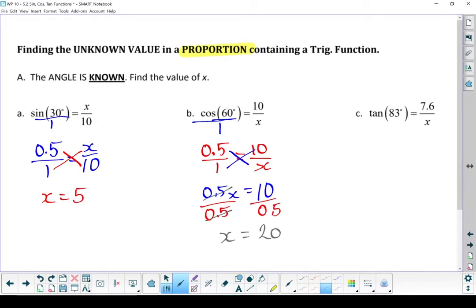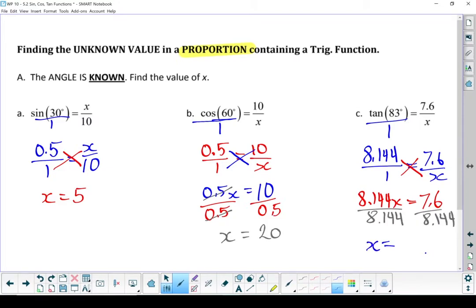One last example. Same thing. Turn it into a proportion. Now let's figure out what that decimal is. So tan of 83. Now it's going to give me a whole bunch of decimals. We're going to be keeping three decimal places. So tan of 83 is 8.144. Let me rewrite everything else down from that. Next I'm going to cross-multiply. Divide both sides by 8.144. In this case, x equals 0.9 after rounding, of course.